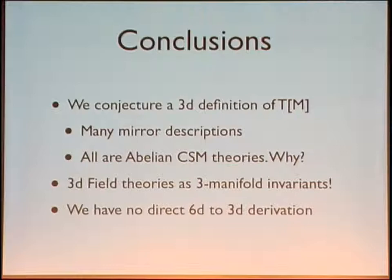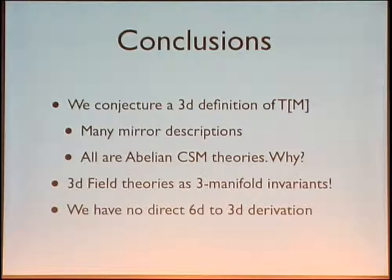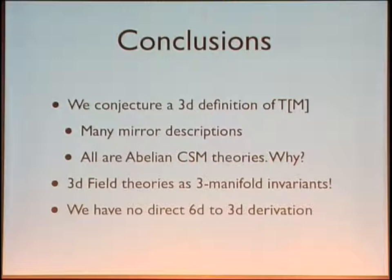What are the conclusions? We have conjectured a three-dimensional definition of the theory T[M]. It has many different mirror descriptions, but they all define the same infrared theory. For some reason not yet clear to us, these are all abelian Chern-Simons theories — we did get this by construction, but I still don't have a good physical intuition of why. We now have a three-dimensional field theory defined in a pretty elementary way, which gives you a topological invariant of three-manifolds and knots. We have no direct derivation of these three-dimensional theories from six dimensions, but it would be nice to have it.